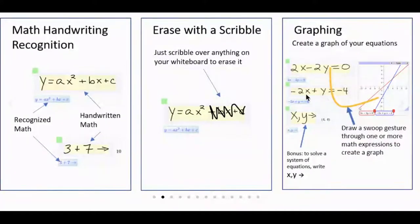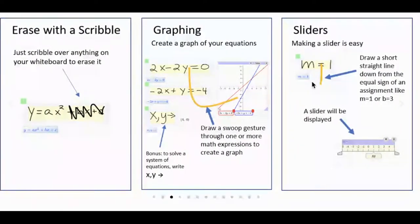To graph, once you have your equations written, if you just draw this swoop gesture through one or more of your equations, it'll create a graph for it. Same with sliders. If you draw a straight line down, it'll give you a number line slider to manipulate.